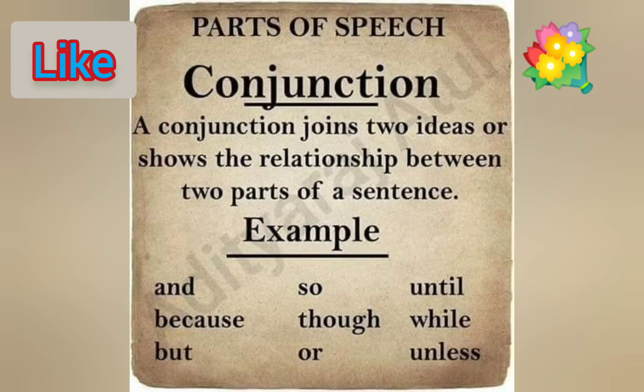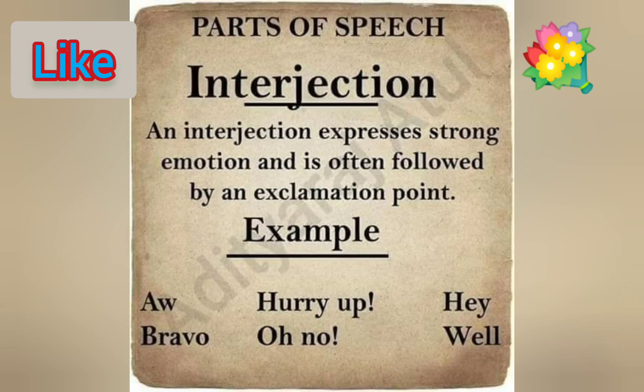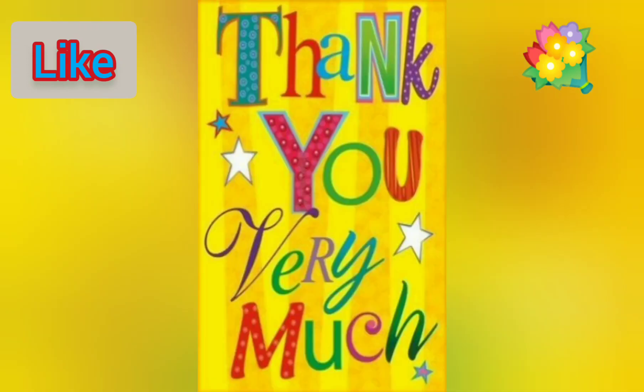A conjunction joins two ideas or shows the relationship between two parts of a sentence — and, so. An interjection expresses strong emotion and is often followed by an exclamation point. Example: Hurry up! Thank you very much.